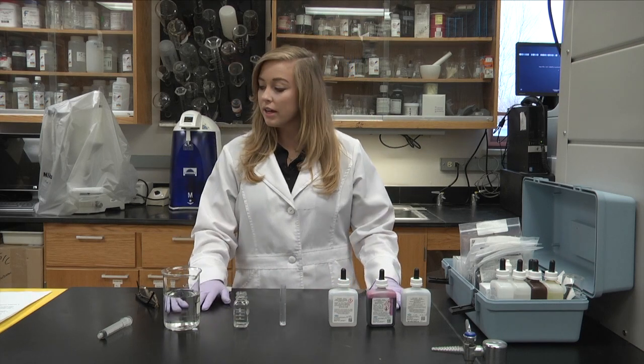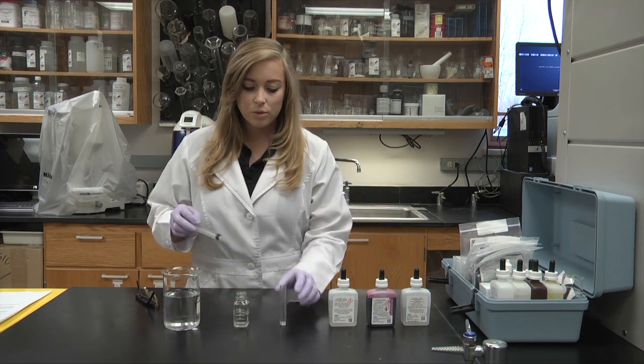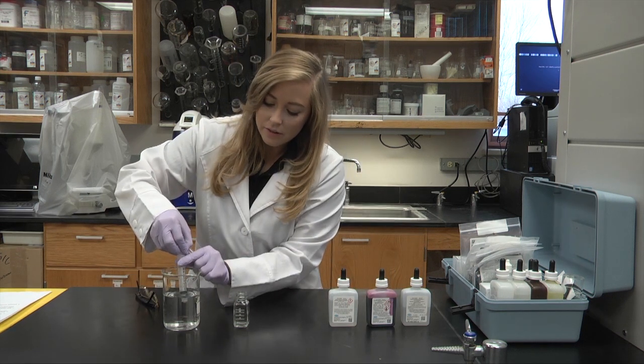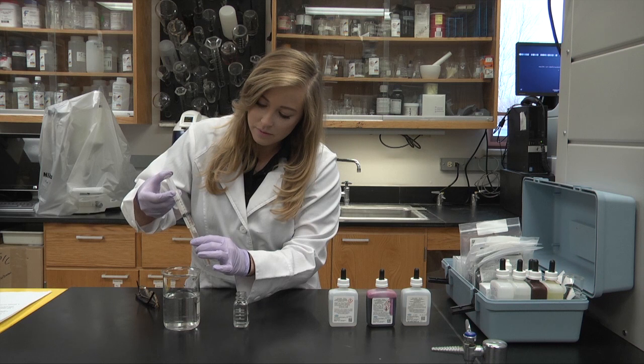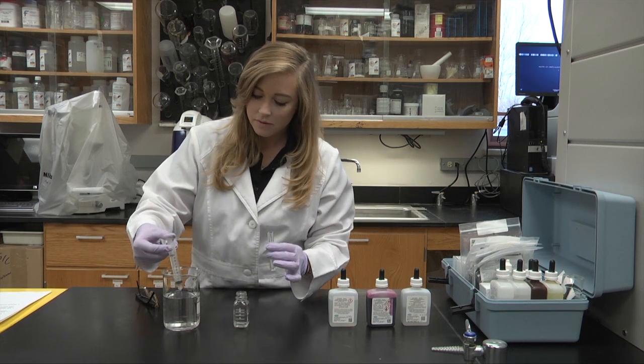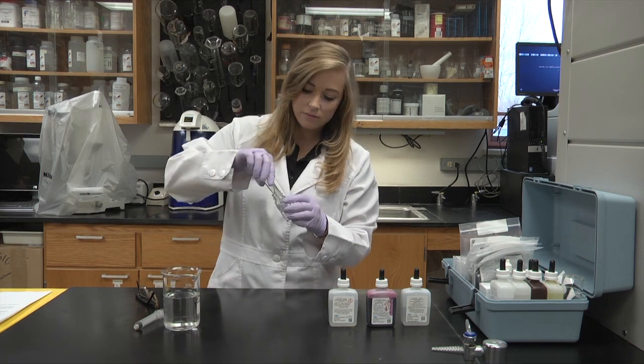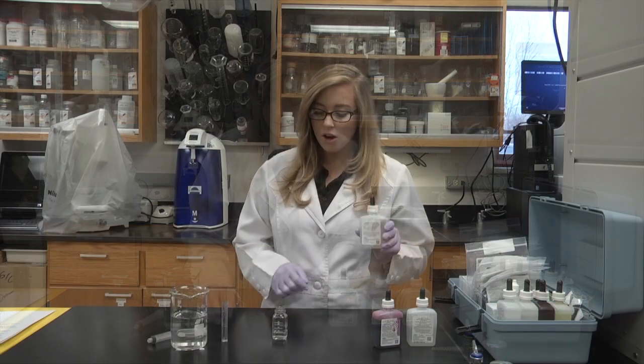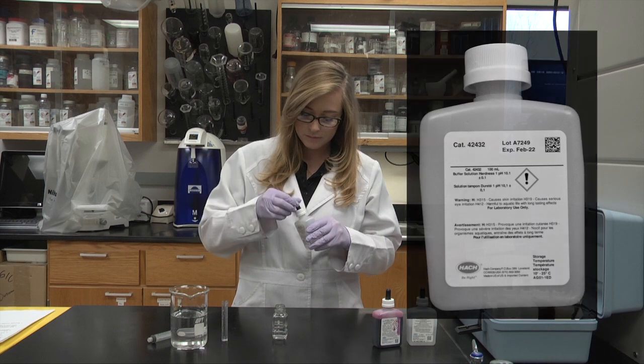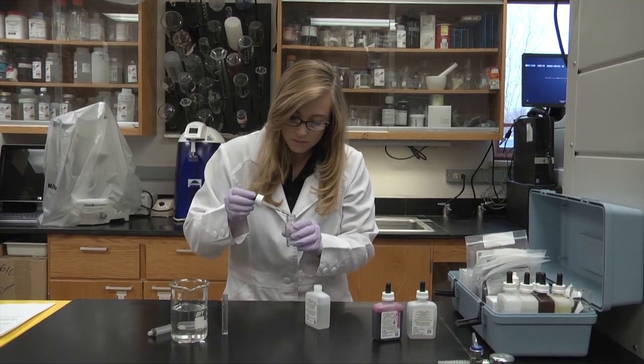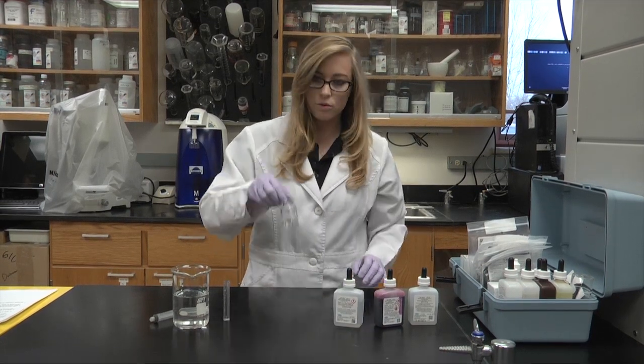First off, we're going to do hardness, and hardness is the amount of calcium and magnesium found in the water. So we'll take our plastic tube and fill it full of water. We will then put it in our mixing bottle. Now we're going to add three drops of the buffer solution, hardness one, and then swirl to mix.